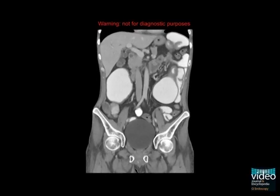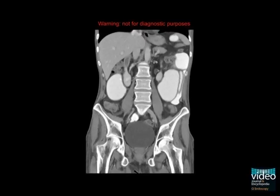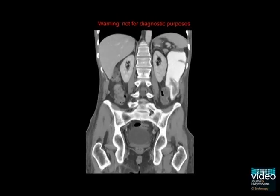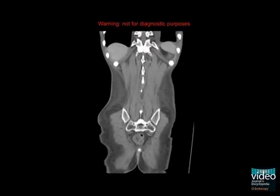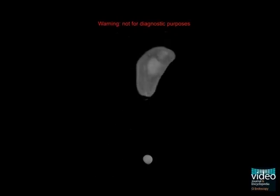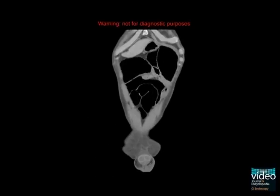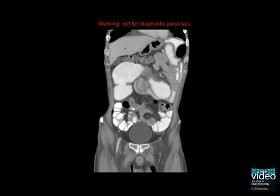Computed tomography demonstrates largely dilated small bowel together with stenotic segments that appear with thickening of the bowel wall.